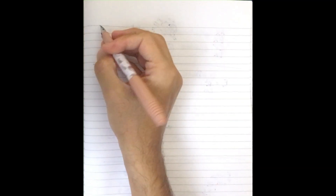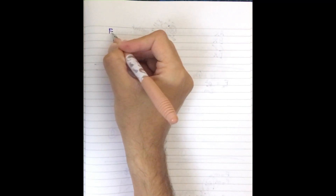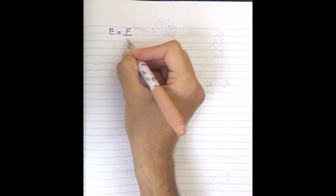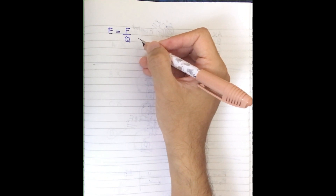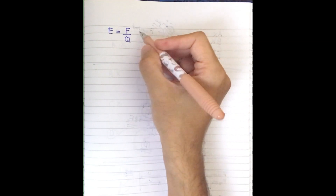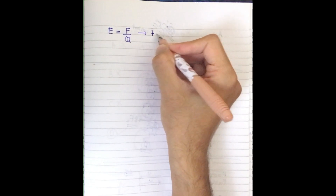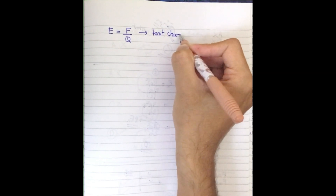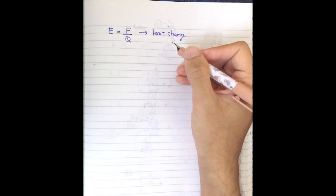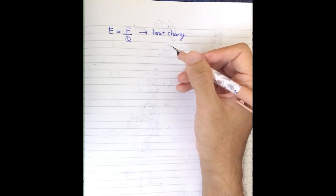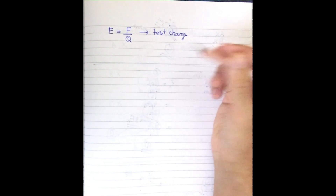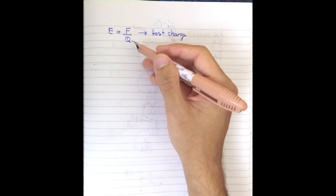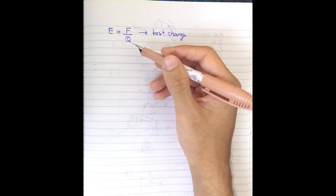I can use the formula E equals F divided by q. The reason I use this formula is because there are two test charges — one is the proton and one is the helium nucleus. Both are moving in a uniform electric field, so we can use this formula to figure it out.